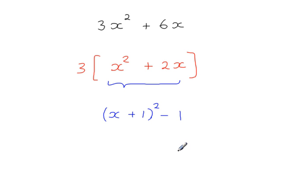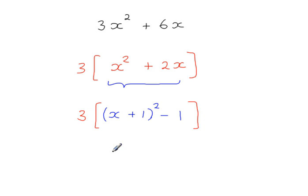Now we know the whole thing is multiplied by 3, so I should put 3 on the outside with square brackets. Everything on the inside is multiplied by 3, and then I'm going to multiply out these square brackets.